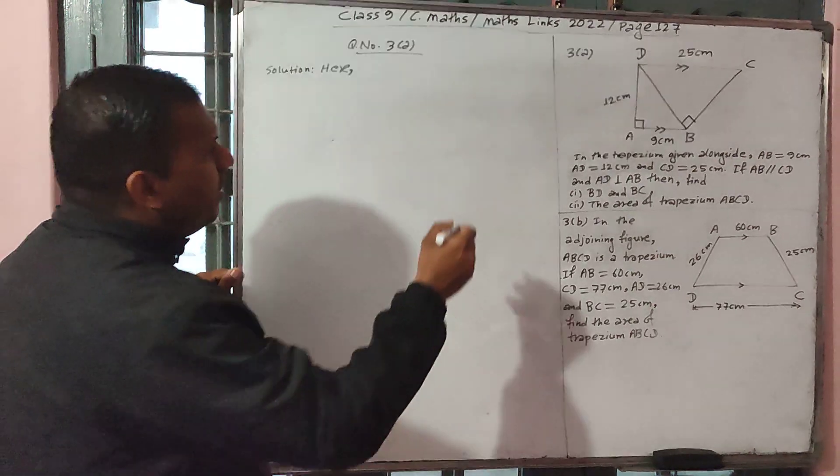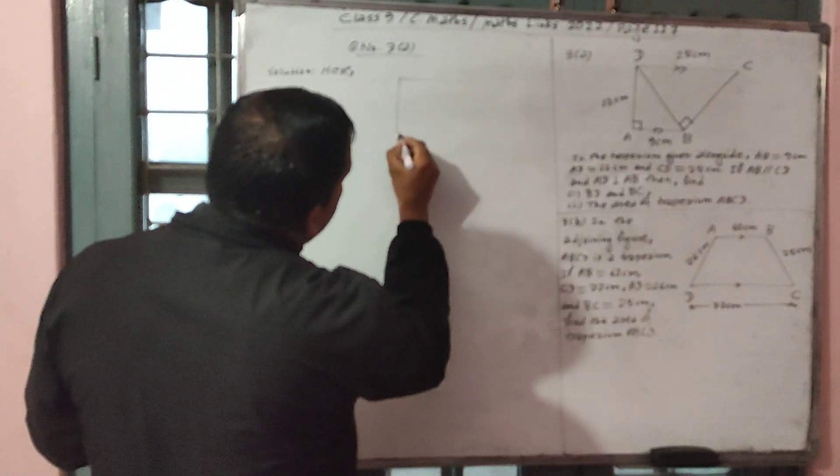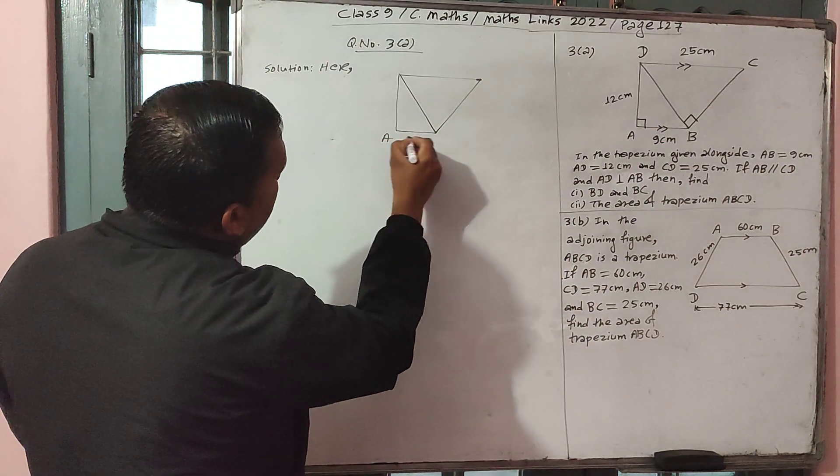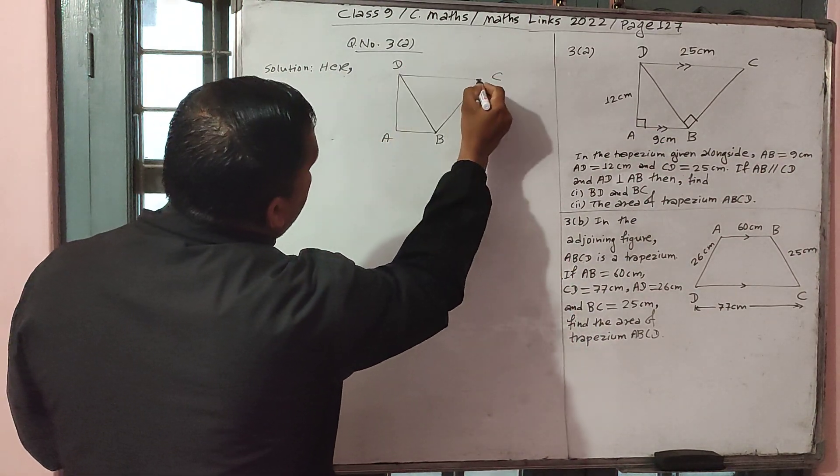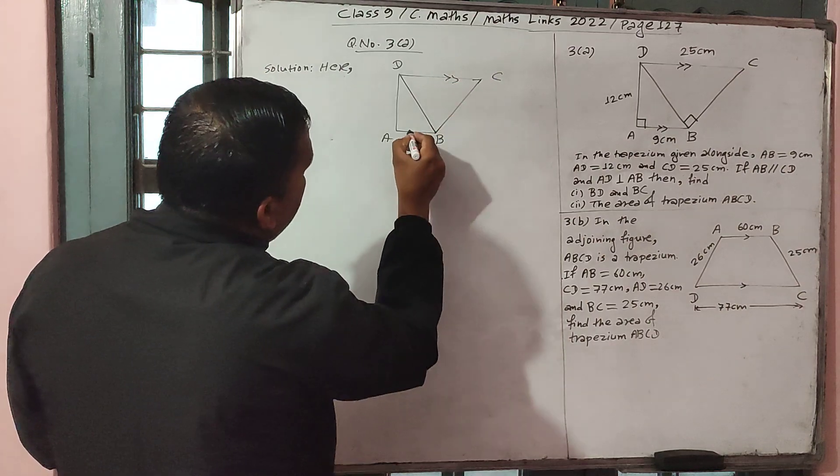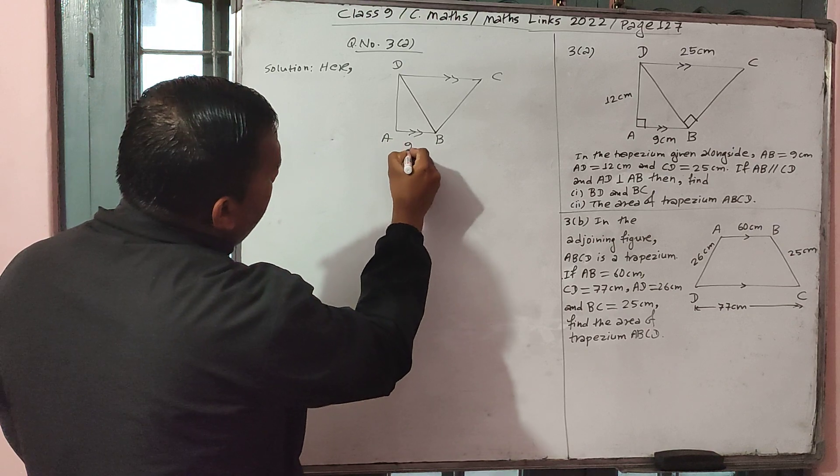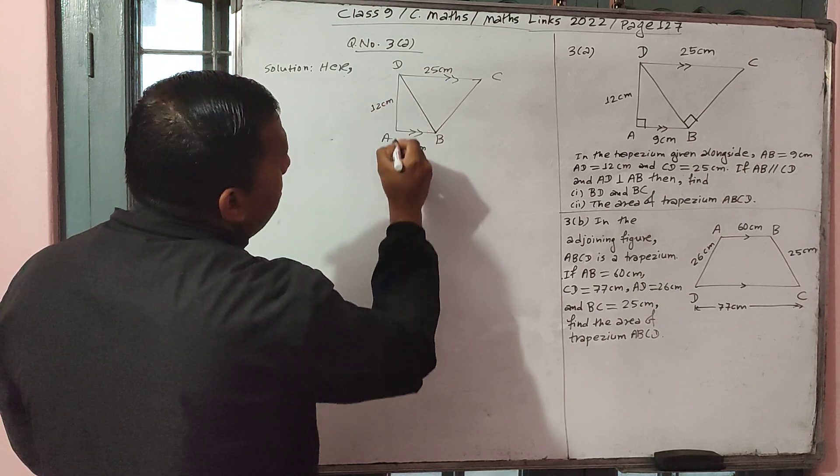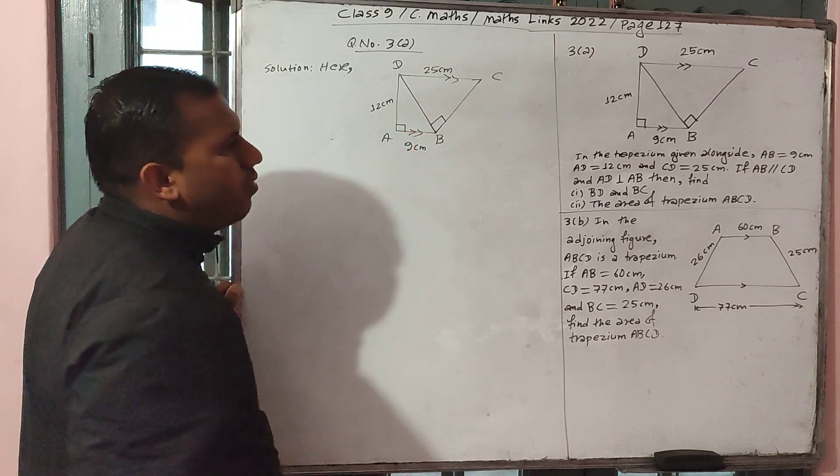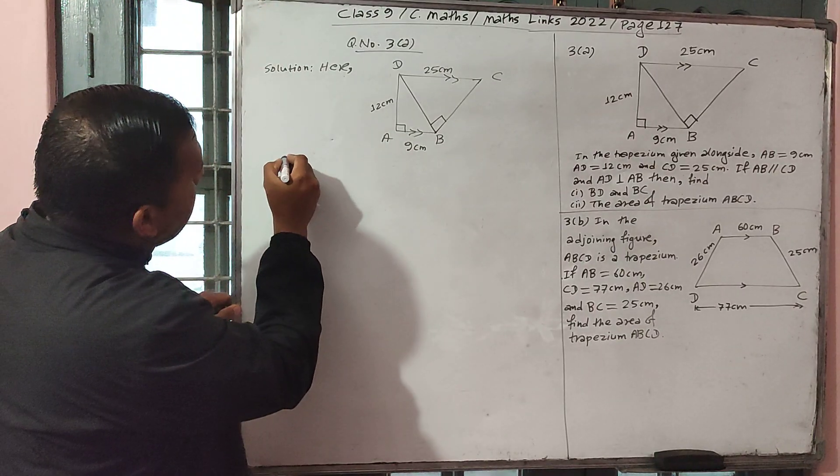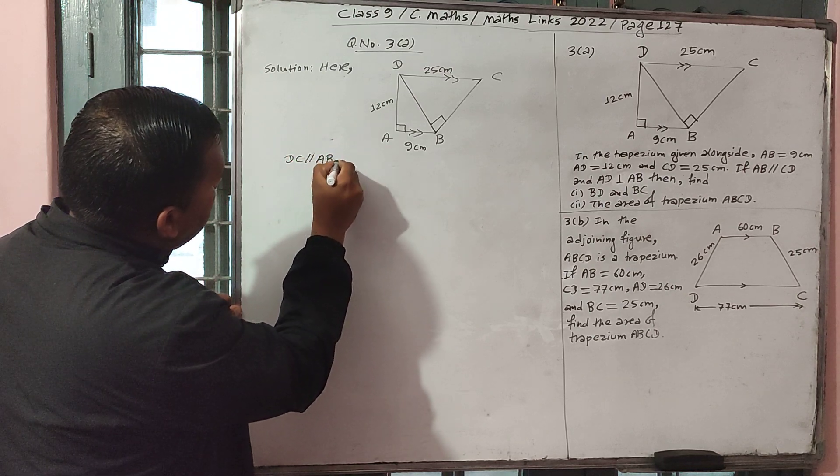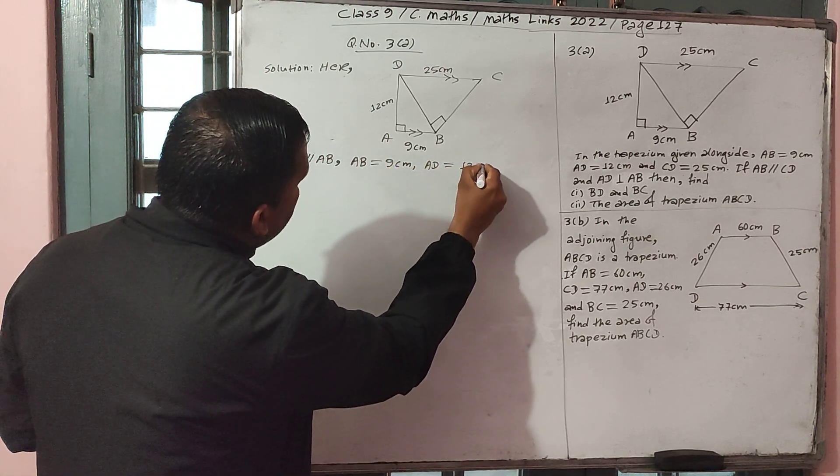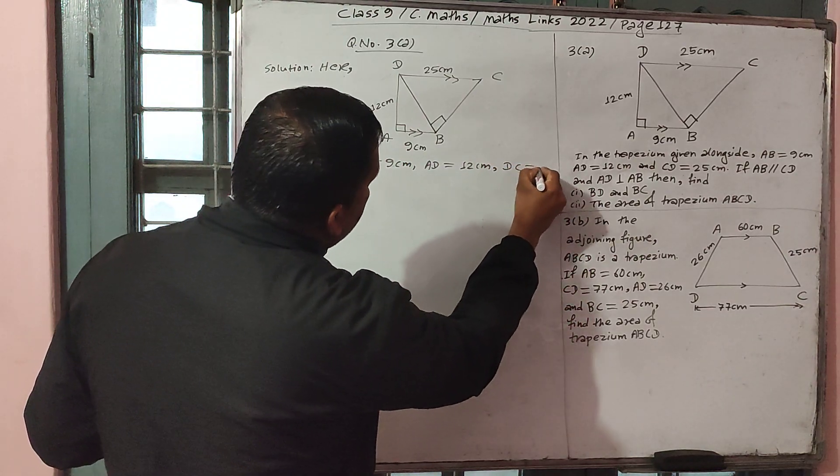First of all, we have to draw the figure. ABCD, DC parallel to AB. AB is 9 centimeter, DC is 25, AD is 12 centimeter. Angle A is 90 degrees, angle D is also 90 degrees. DC parallel to AB, AB is 9 centimeter, AD is 12 centimeter, DC is 25 centimeter.